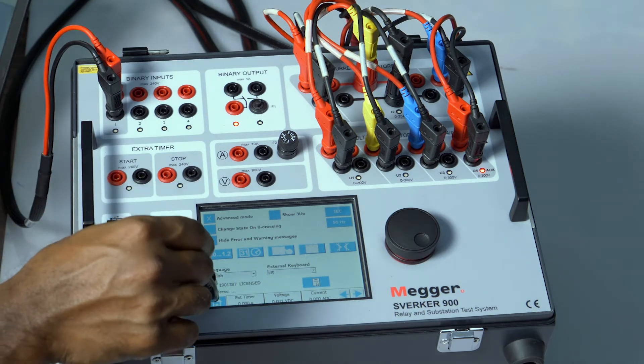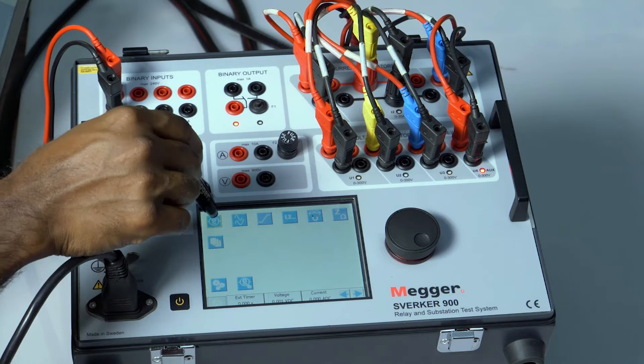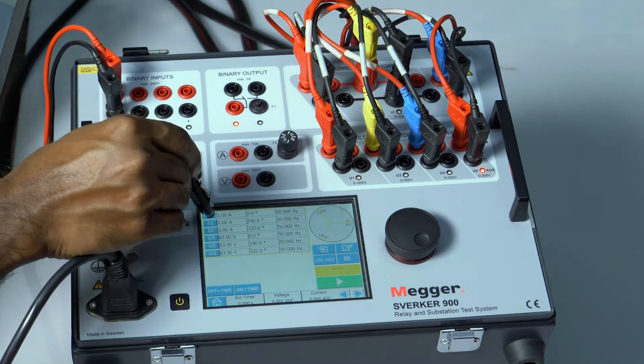Press the home screen, click on the basic module, select the source for injection by pressing the I1 button.